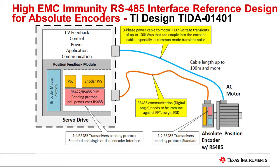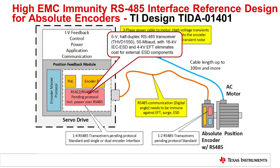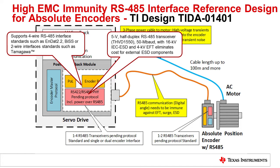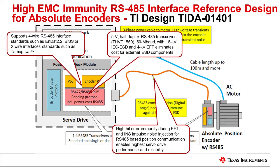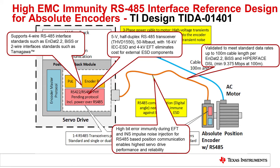This design is built to fit the encoder interface of an industrial drive or the communication module of the encoder. The THVD-1550 5V RS-485 transceiver enables easy, high EMC immunity for RS-485 communication in industrial systems due to the high bit error immunity during EMC events, providing high performance and communication reliability. The RS-485 data rate communication has been tested in cables up to 100 meters and meets the needs of maximum data rates for typical encoder standards.